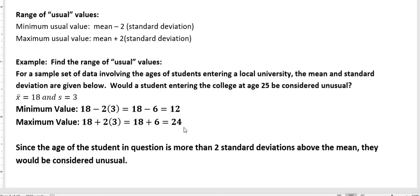12 seems pretty low, but anyways, would a student entering the college at age 25 be considered unusual? Well, in this case they would be, because up till 24 is in our usual range of values. Anything above 24 or below 12 would be considered unusual. Since the age of the student in question is more than two standard deviations above the mean, they would be considered an unusual age coming into that college.